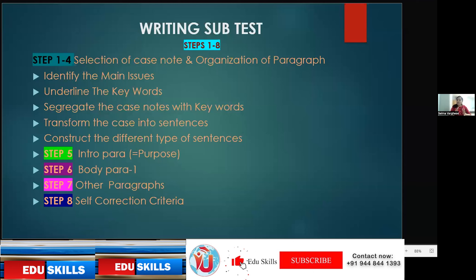Construct different types of sentences — mostly complex sentences, since we cannot just transfer the case note directly; we must form proper sentences and add connectors where needed. Steps one to four are very important because they help you understand the main issue and keywords, making it easy to form sentences. Then you segregate according to paragraphs: purpose paragraph, current situation, assessment, then background.